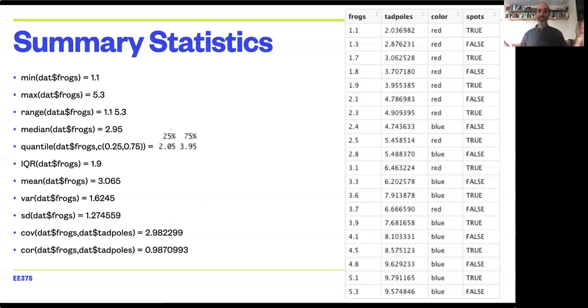And if you have a normal distribution, you probably learned from your intro stats class that 95% of the data typically falls within about two standard deviations, plus or minus two standard deviations.